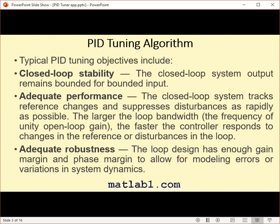The MathWorks algorithm for tuning PID controllers meets these objectives by tuning the PID gains to achieve a good balance between performance and robustness. By default, the algorithm chooses a crossover frequency (loop bandwidth) based on the plant dynamics, and designs for a target phase margin of 60 degrees. When you interactively change the response time, bandwidth, transient response, or phase margin using the PID Tuner interface, the algorithm computes new PID gains.